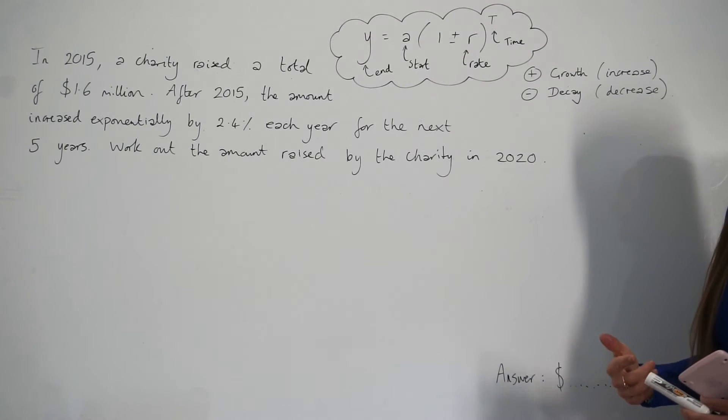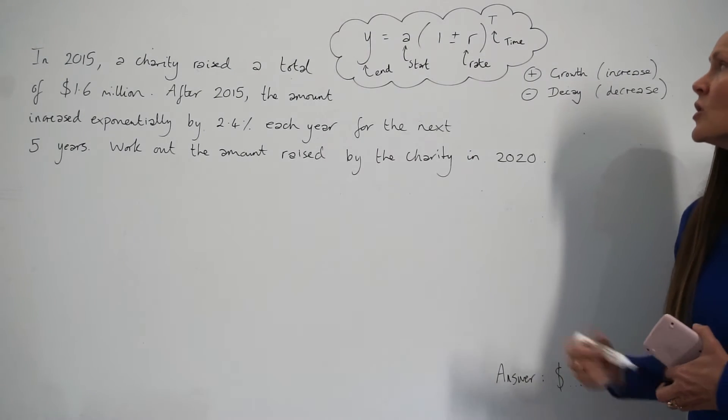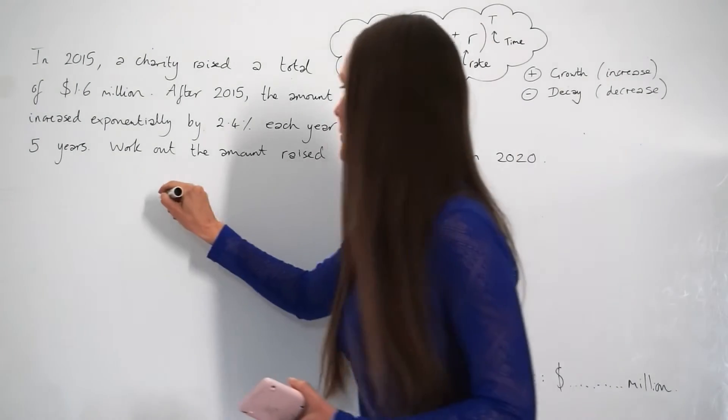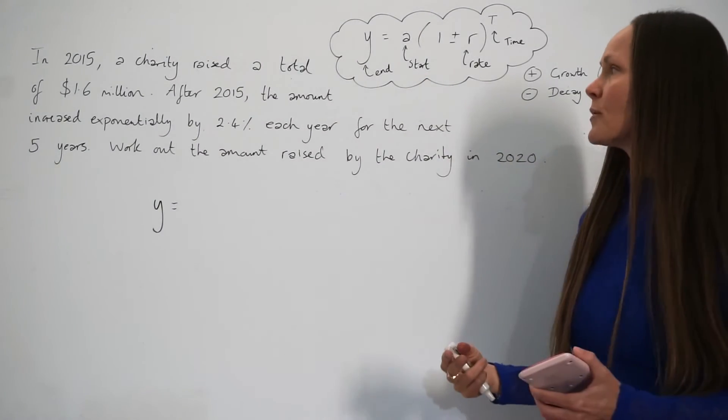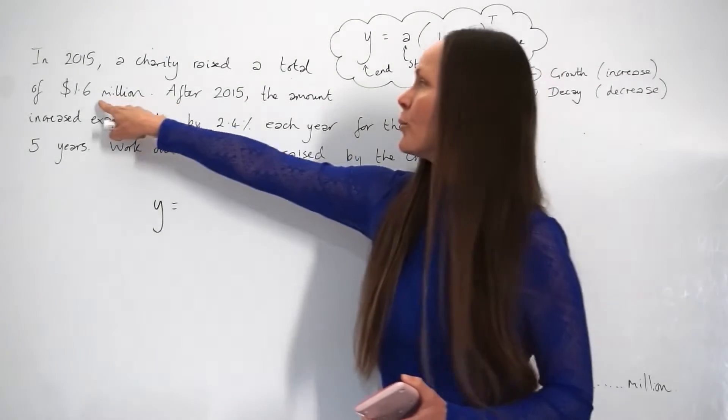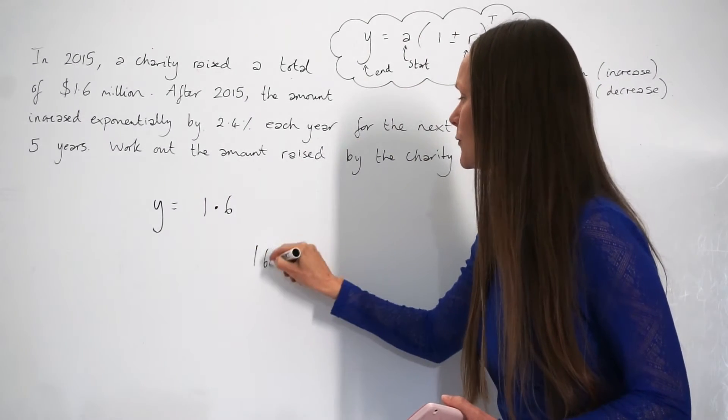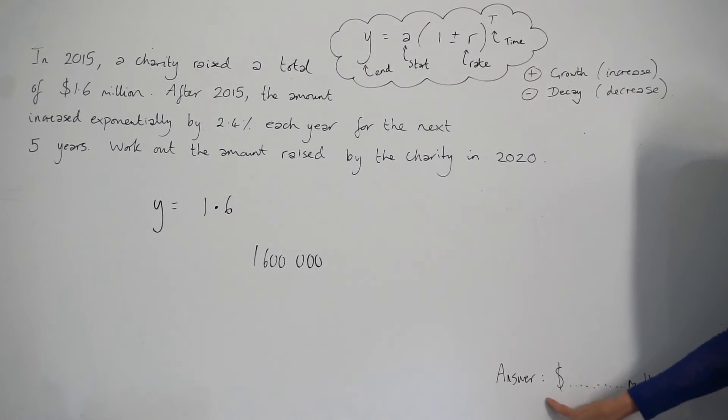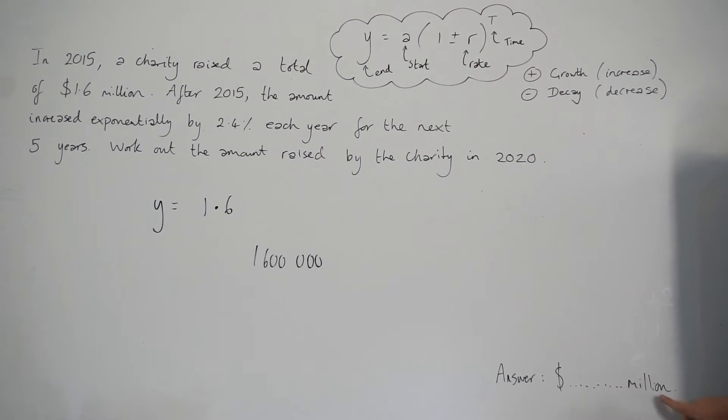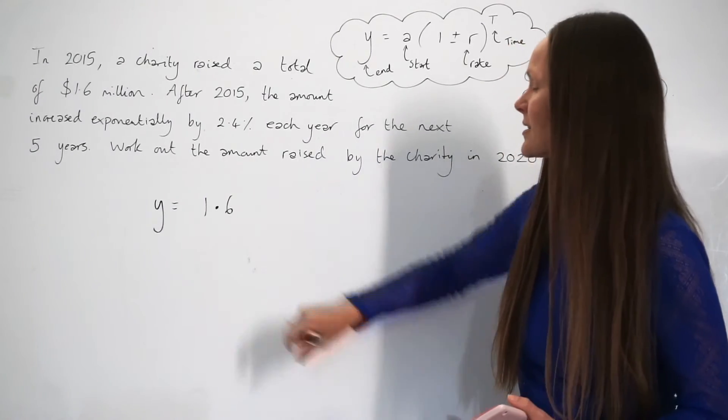And just like previously, it says to work out the end value y. So after the five years. So to work out y in this question, we have to take the start amount. So that's the amount of money they raised in 2015, so $1.6 million. And you can leave it as 1.6. You don't have to write it out in full like this, because when you look at the answer line, it says million here. If it didn't say million, then you could write it out in full. But since it says million, we don't have to write it out in full. We can just leave it as 1.6.